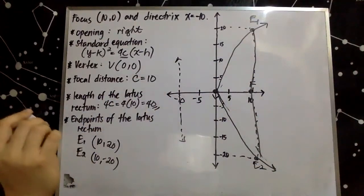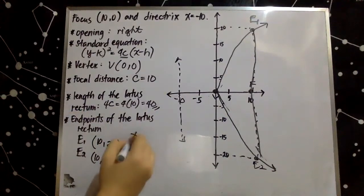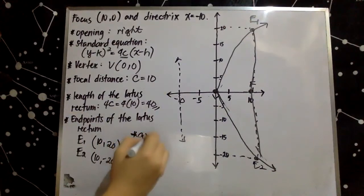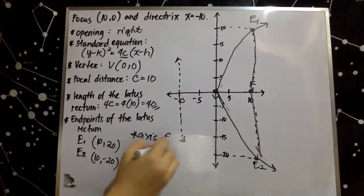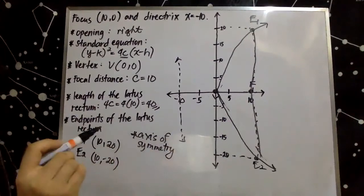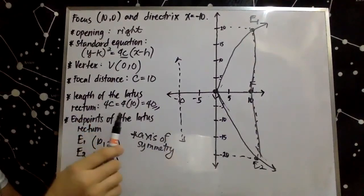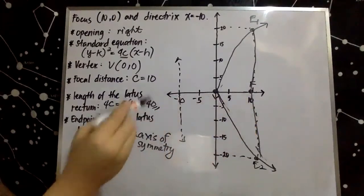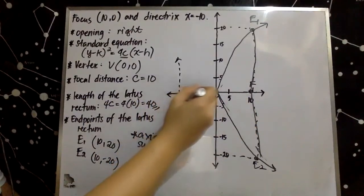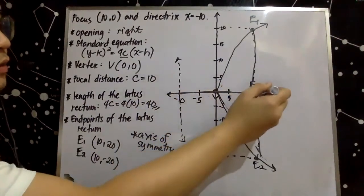The last thing we need to determine is the axis of symmetry. The axis of symmetry is the line that divides the parabola into two equal parts, and this line passes through the vertex and the focus. This is your axis of symmetry.